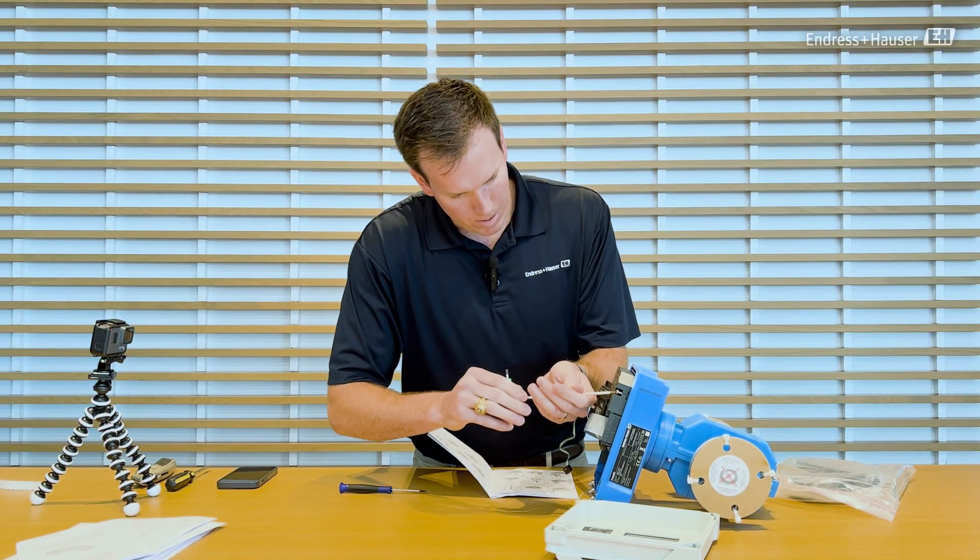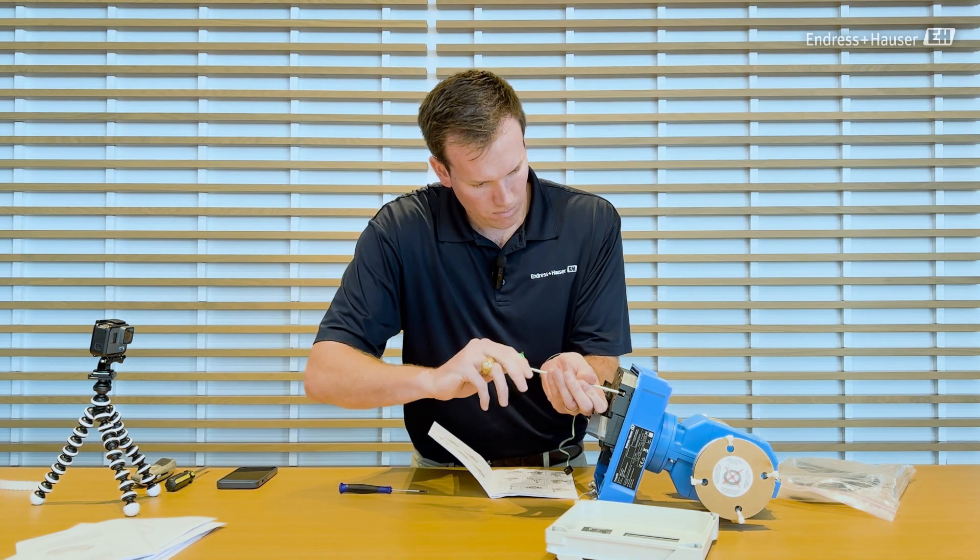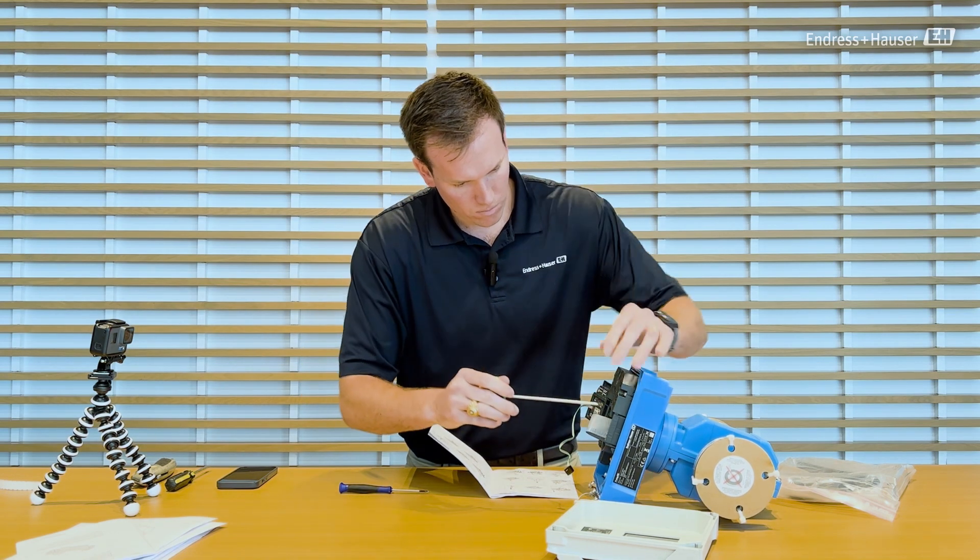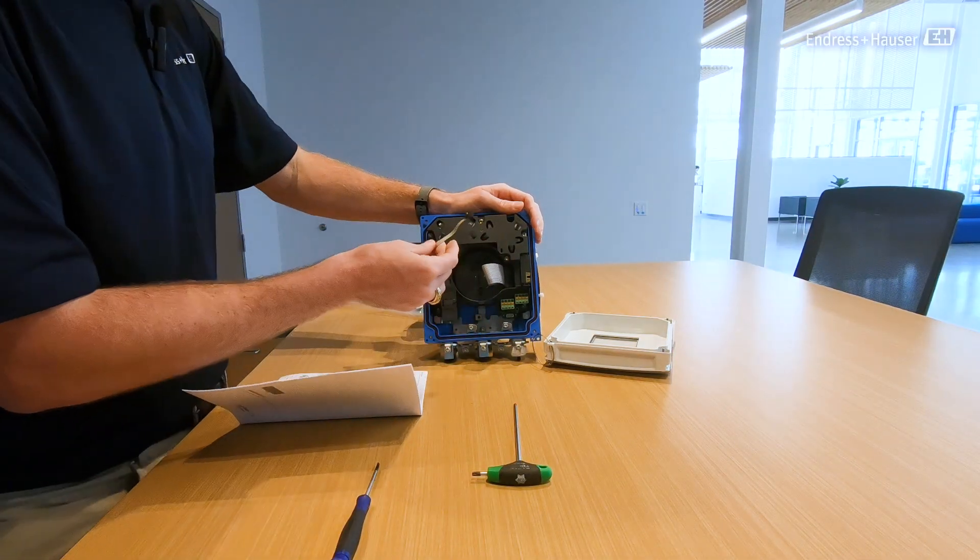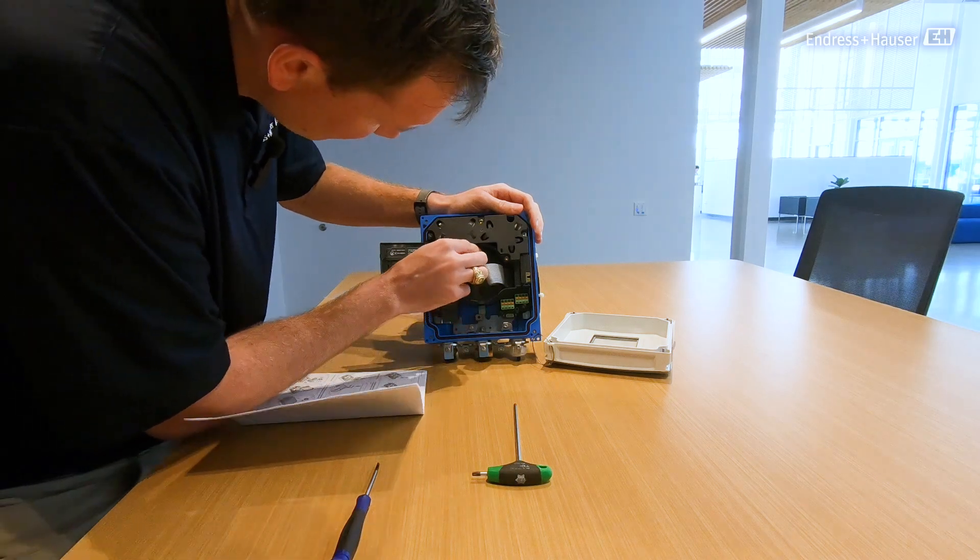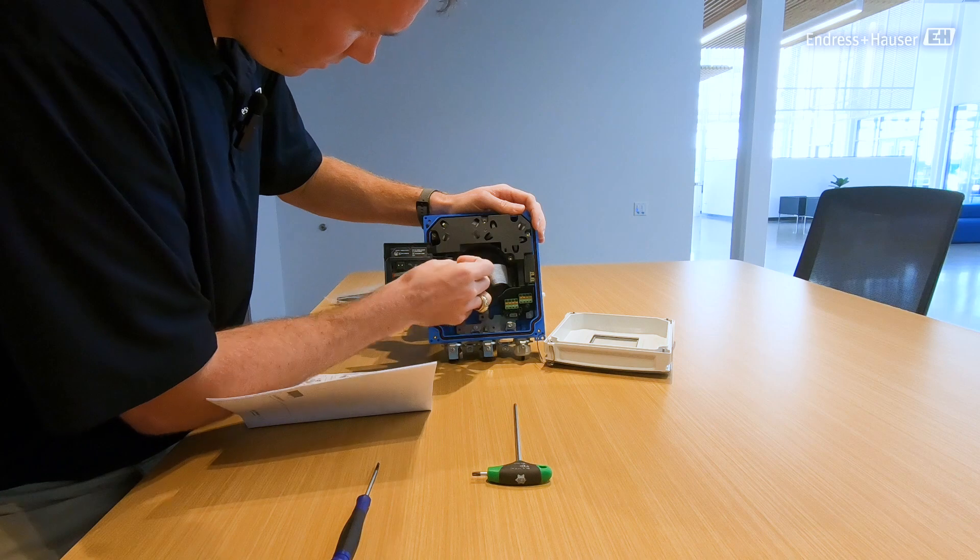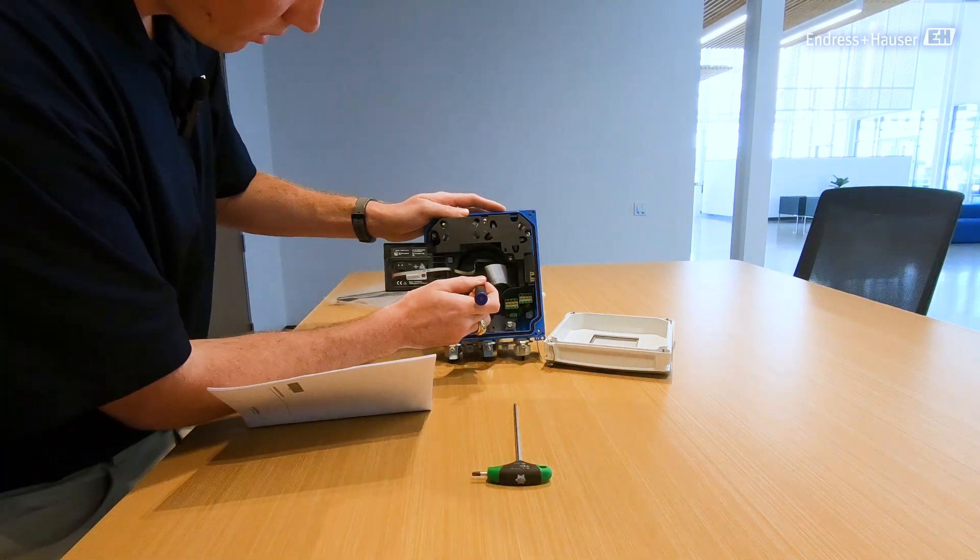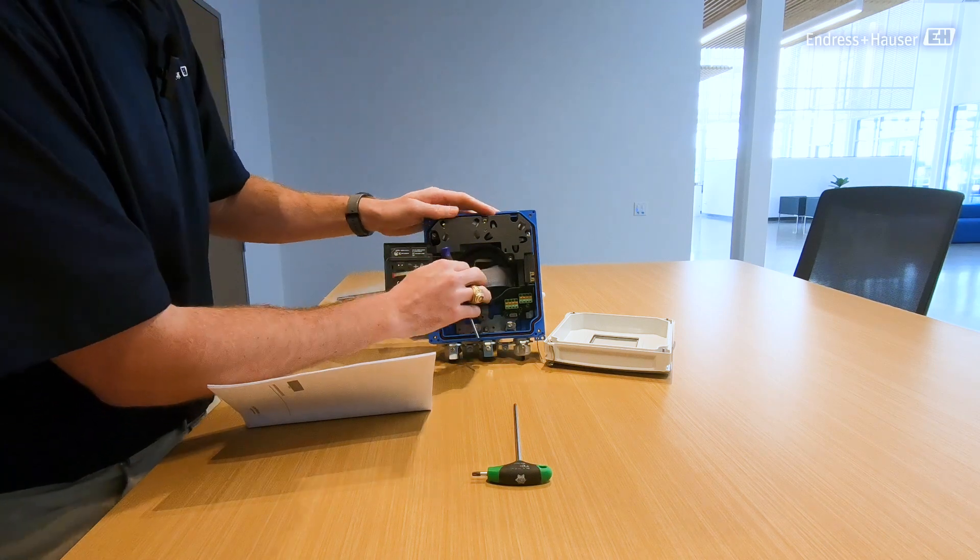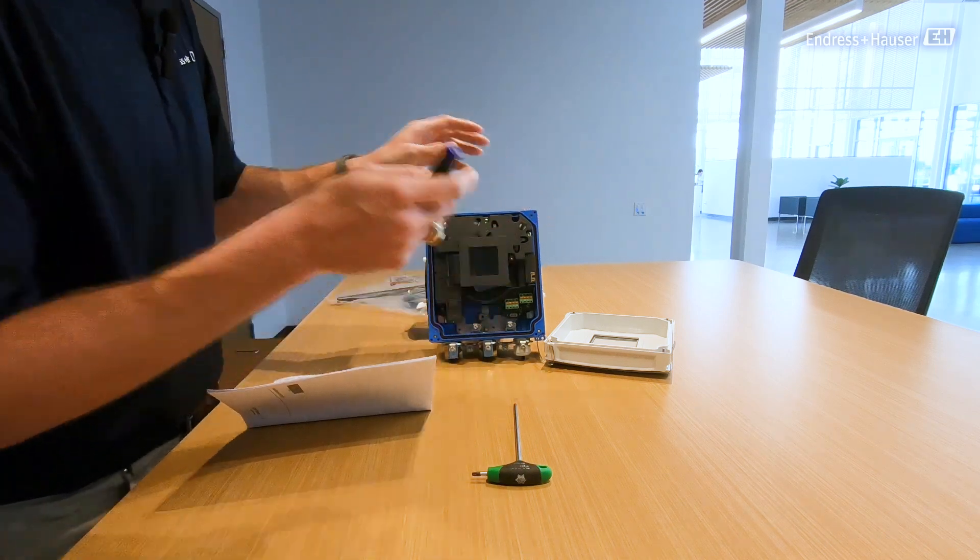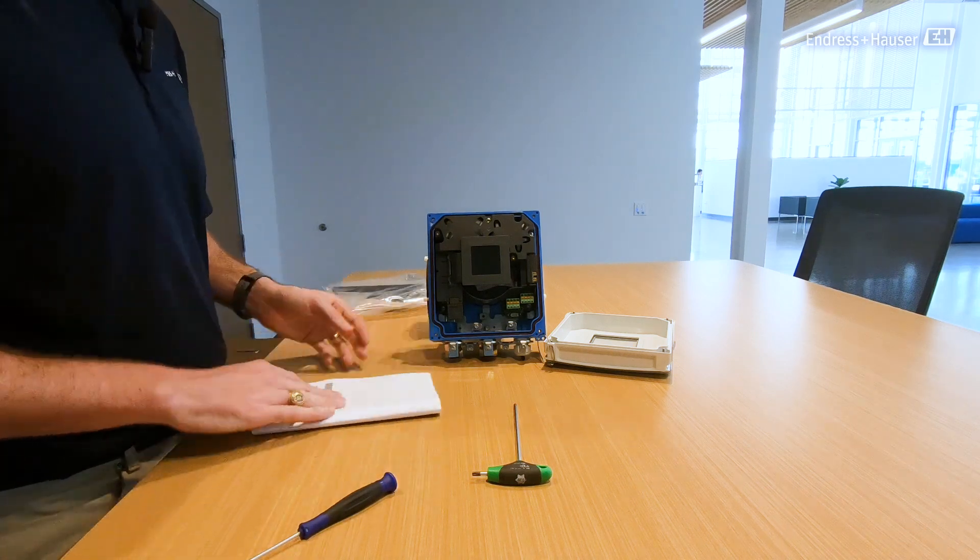We put our battery compartment back. Reconnect our ribbon cable and our display cable. Then I'm going to turn this back to on. And my meter should be powering up.